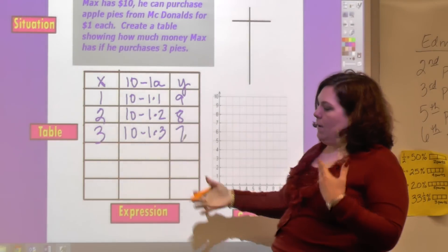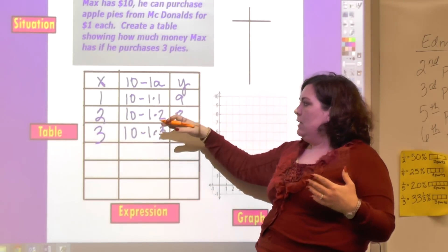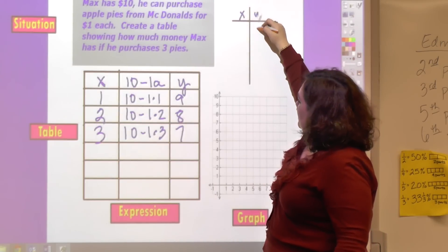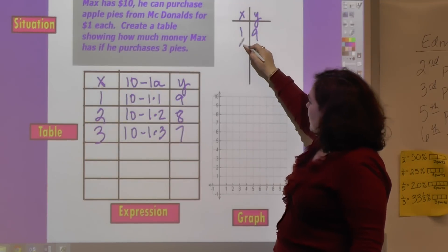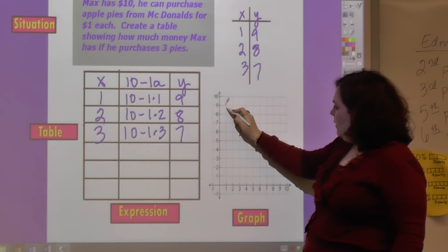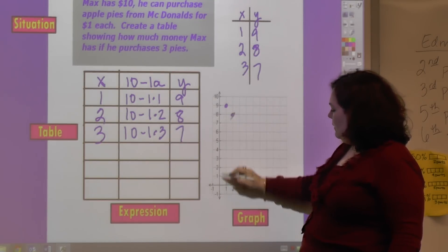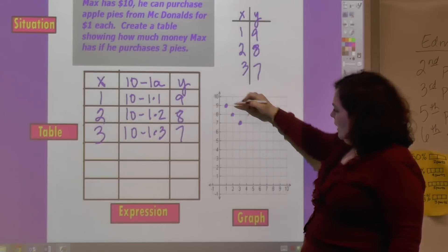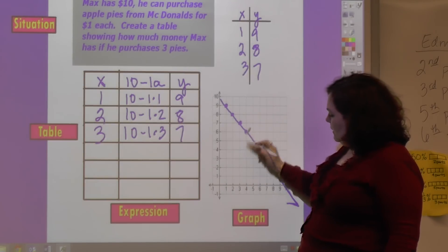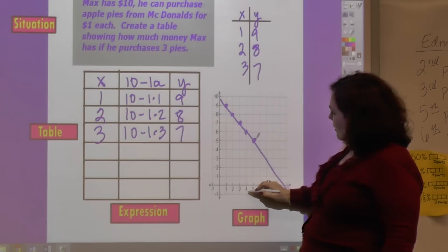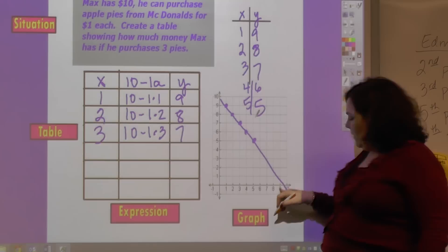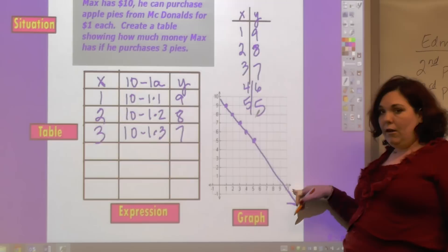His money goes down as he gets more pies. This is his money. So this is X and this is Y. So this is one and nine, two and eight, and three and seven. So one and nine, two and eight, three and seven. This would continue going down, and you could see where the additional points would be. It would be four and six, five and five, and it would go all the way down to where he spent all his money and bought all his 10 pies.